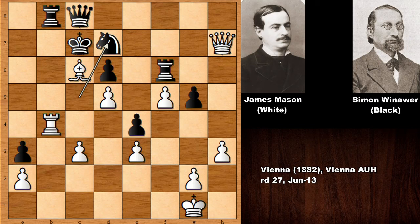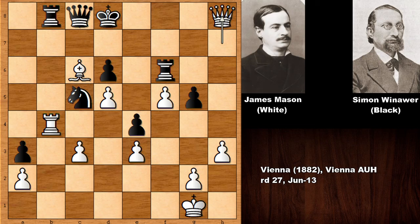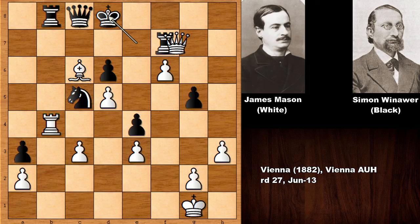Black has a very difficult defensive task. If king to d8, white checks and forks the king and rook. If king to e7, defending, then queen to g7. Rook to f7 doesn't work because of f6 — the rook is pinned. Capturing the rook, and black can resign. This is all over; white has three extra pawns in a winning position.